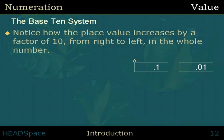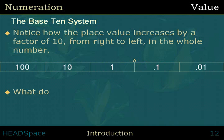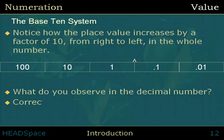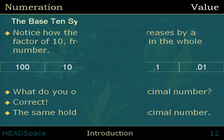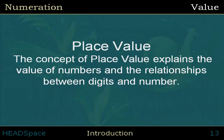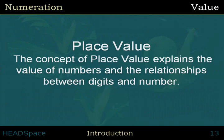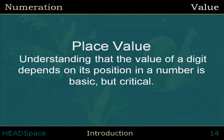Notice how the place value increases by a factor of 10 from right to left in the whole number. The same holds true for the decimal number. The concept of place value explains the value of numbers and the relationships between digits and numbers. Understanding that the value of a digit depends on its position in a number is basic but critical.